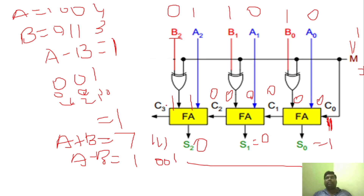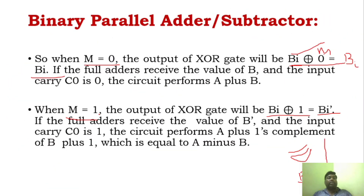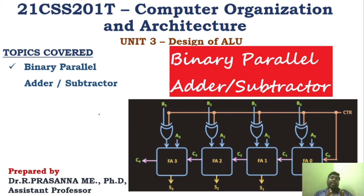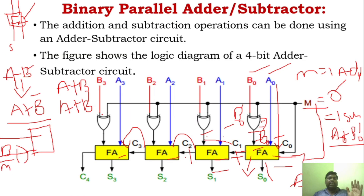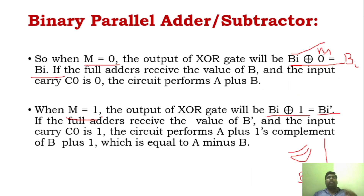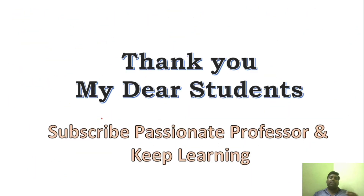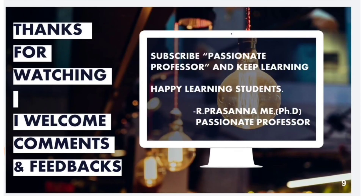The same circuit is used as an adder and as a subtractor depending on whether M is equal to 0 or M is equal to 1. The simple logic is: control signal M determines the operation; M equal to 0 performs addition, M equal to 1 performs subtraction using complement addition. If you understand this logic, you can solve related problems. Thank you students for watching — subscribe to Passionate Professor and keep learning.